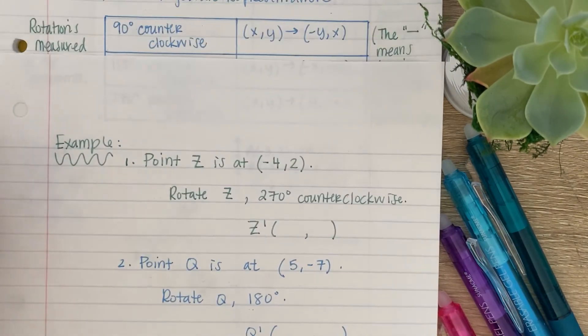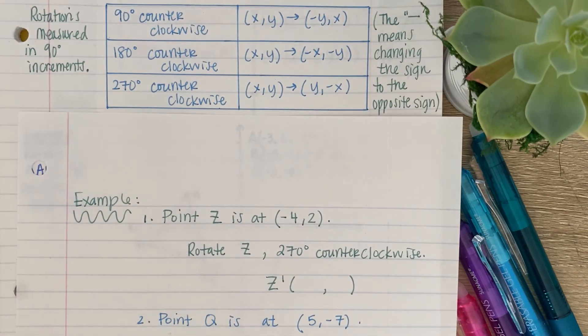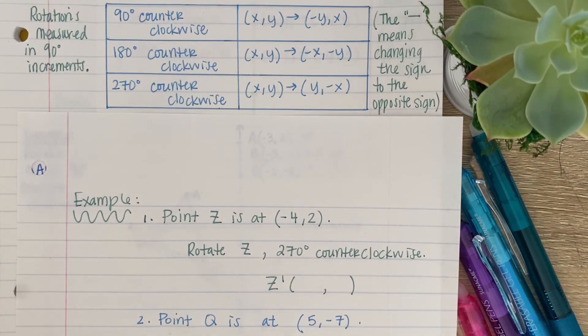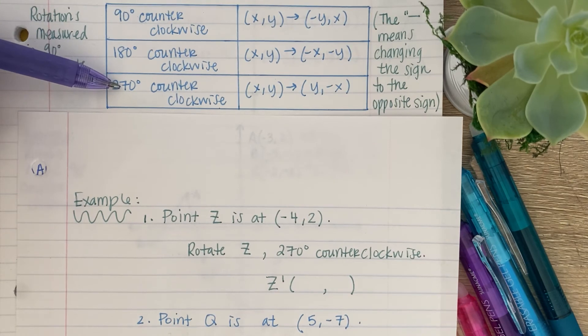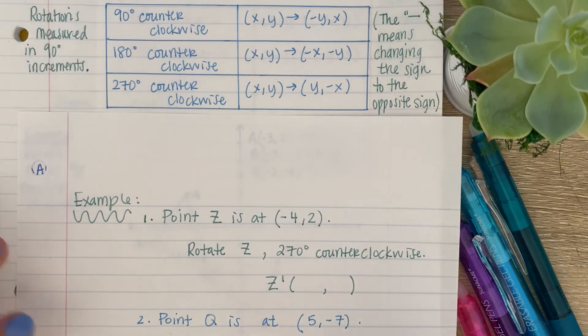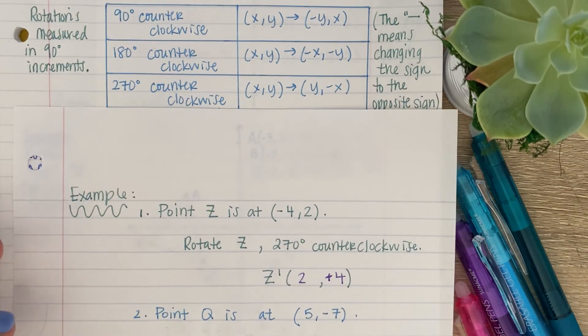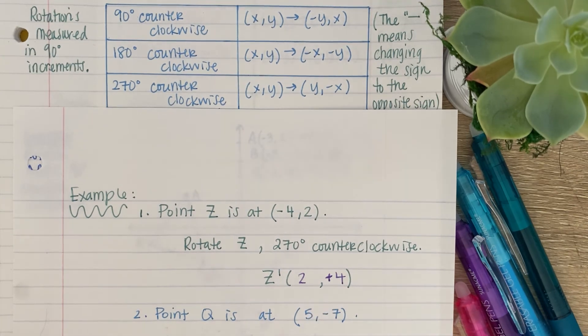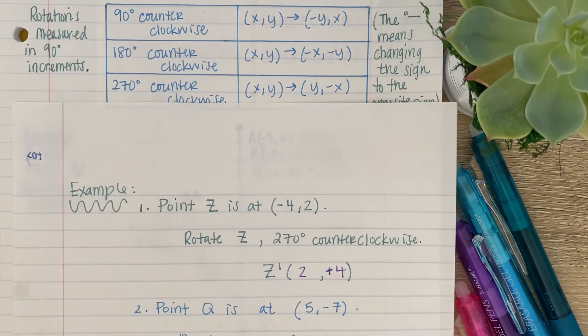All right. Let's say that point Z is at (-4, 2). Now, rotate Z 270 degrees counterclockwise. So, where would our Z prime be? Well, looking at our rules, 270 degrees counterclockwise, you have to flip your numbers and then change the sign on the x. So, I'm going to go ahead and flip my numbers and change the sign on the x. So, Z prime would be at positive 2, positive 4. Yes, I know you don't really put the plus in front, but if you're using a pen, I just did it. If you're using a pencil, super easy to erase.